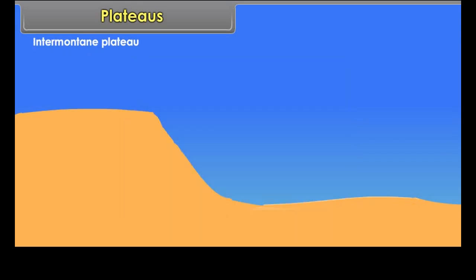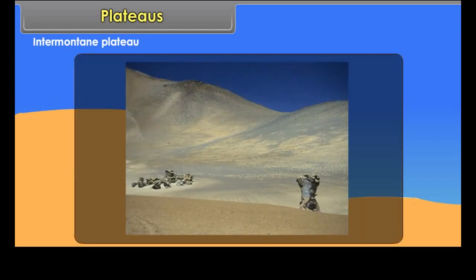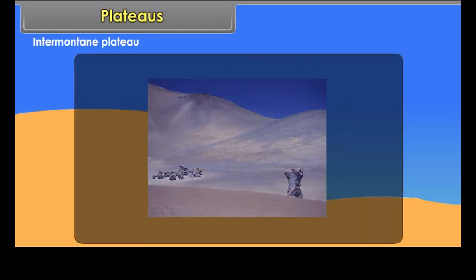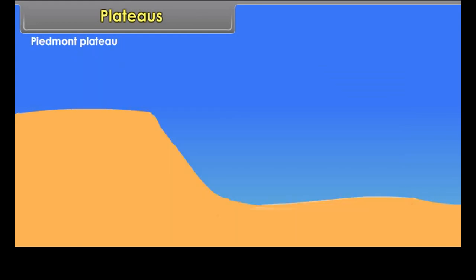Intermontane plateaus are plateaus formed between mountain ranges. The Bolivian plateau and the Tibetan plateau belong to this category. Piedmont plateaus develop at the foot of a mountain.